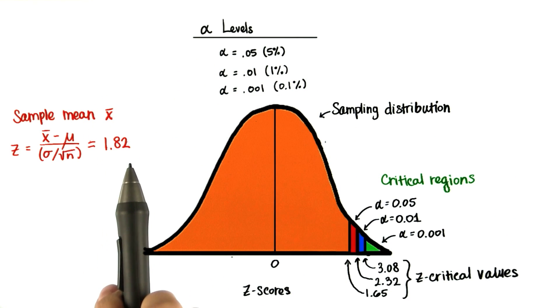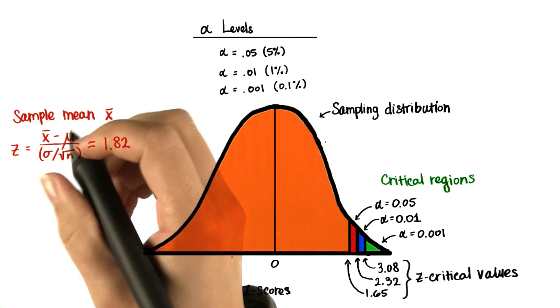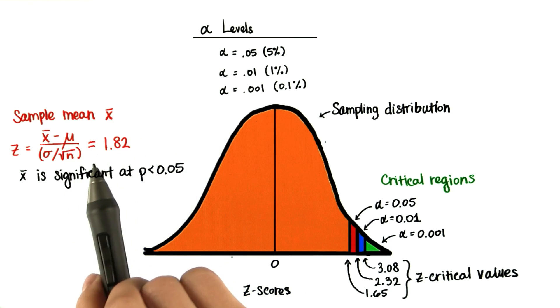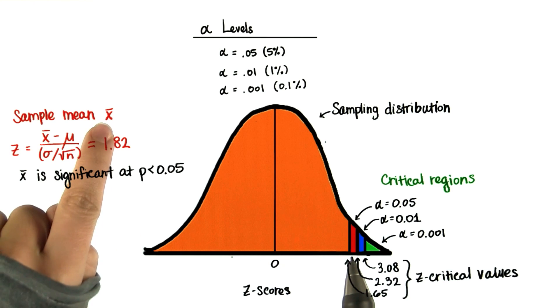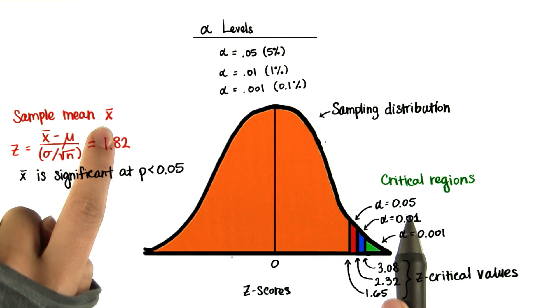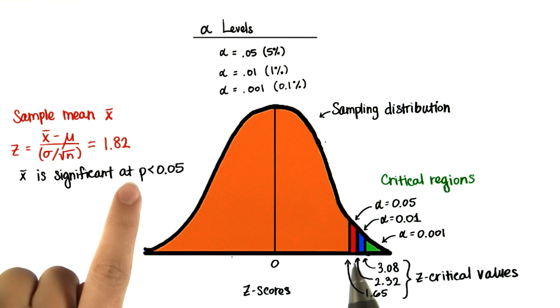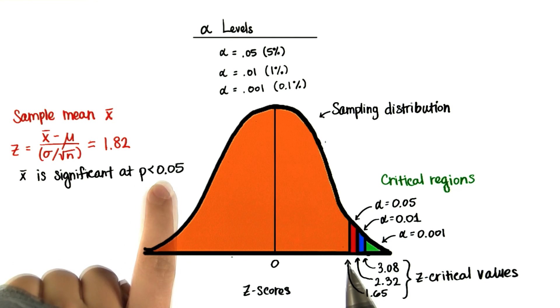We would say that this is significant at p less than 0.05, and that's because if we look at where this z-score falls on the distribution, it falls in between 1.65 and 2.32. So this z-score, 1.82, is somewhere in this red region, meaning that the probability of having obtained this sample mean is less than 0.05, but it's not less than 0.01. So it's only significant at probability, or p, less than 0.05. And remember, 0.05 is the alpha level.